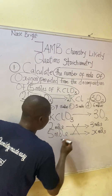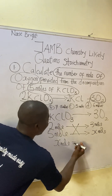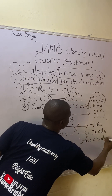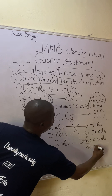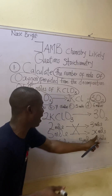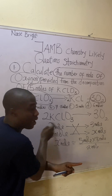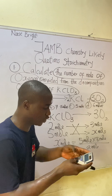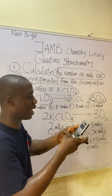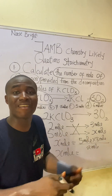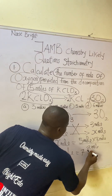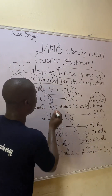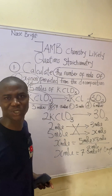The next step is to cross multiply. x moles = (5 moles × 3 moles) divided by 2 moles. We are looking for x, so: x = 5 × 3 ÷ 2. When you hit your calculator, that gives 7.5 moles. So we are having 7.5 moles of oxygen. The answer to the question is option B.